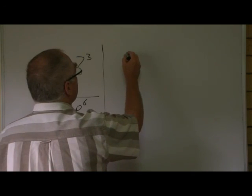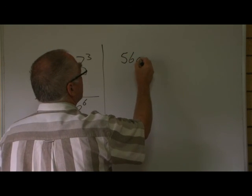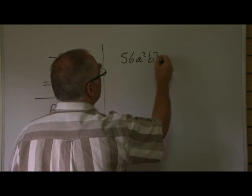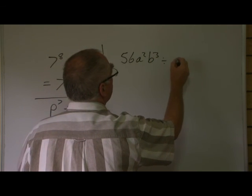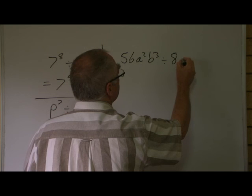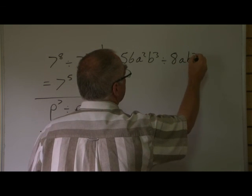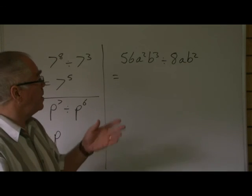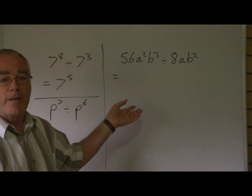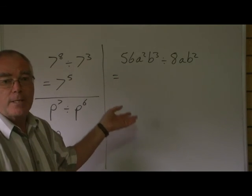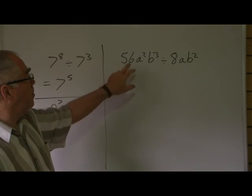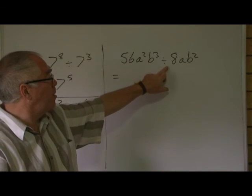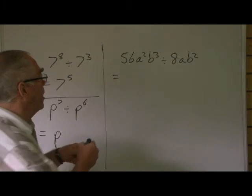Let's do something like 56a squared b cubed divided by 8ab squared. As with multiplication, the numbers don't have a base and an index, so let's just do it normally. 56 divided by 8. 7 times 8 is 56, so the number's 7.